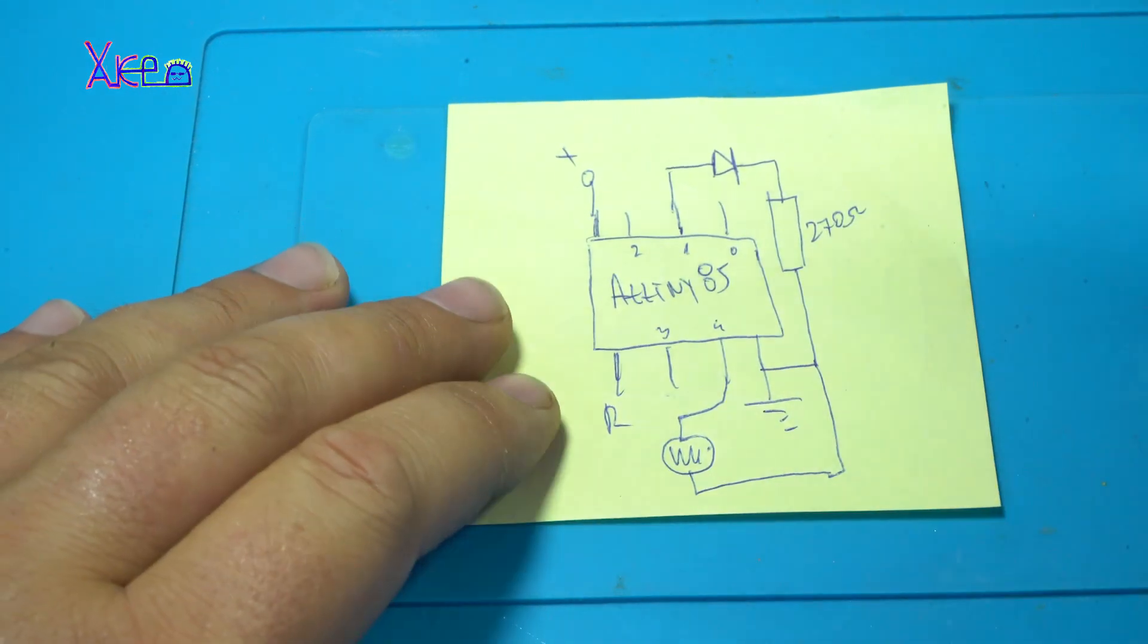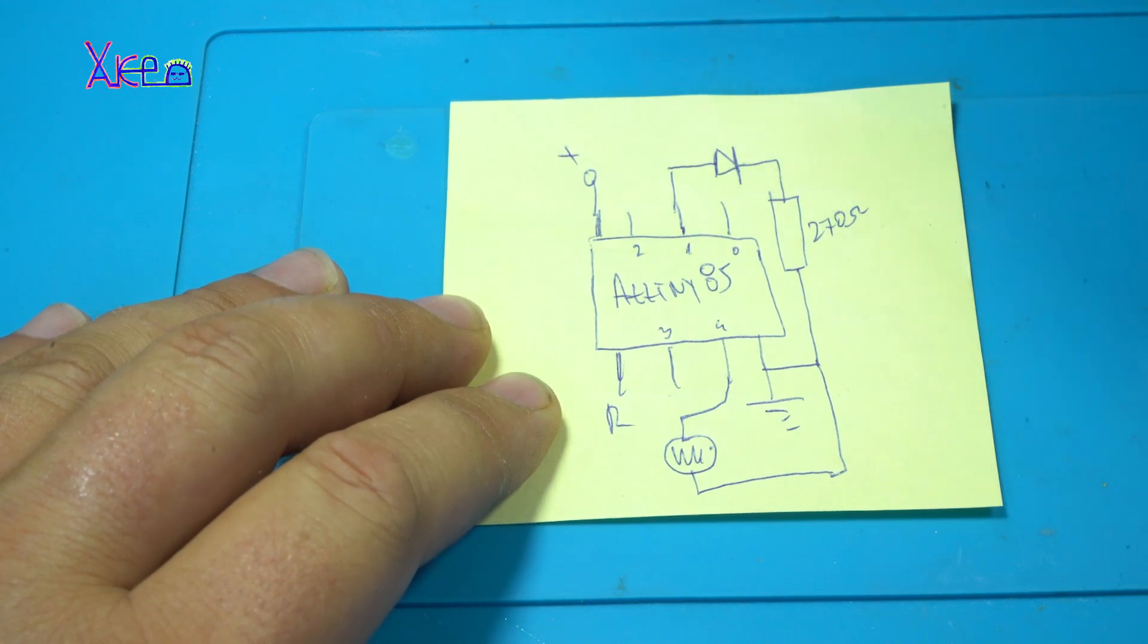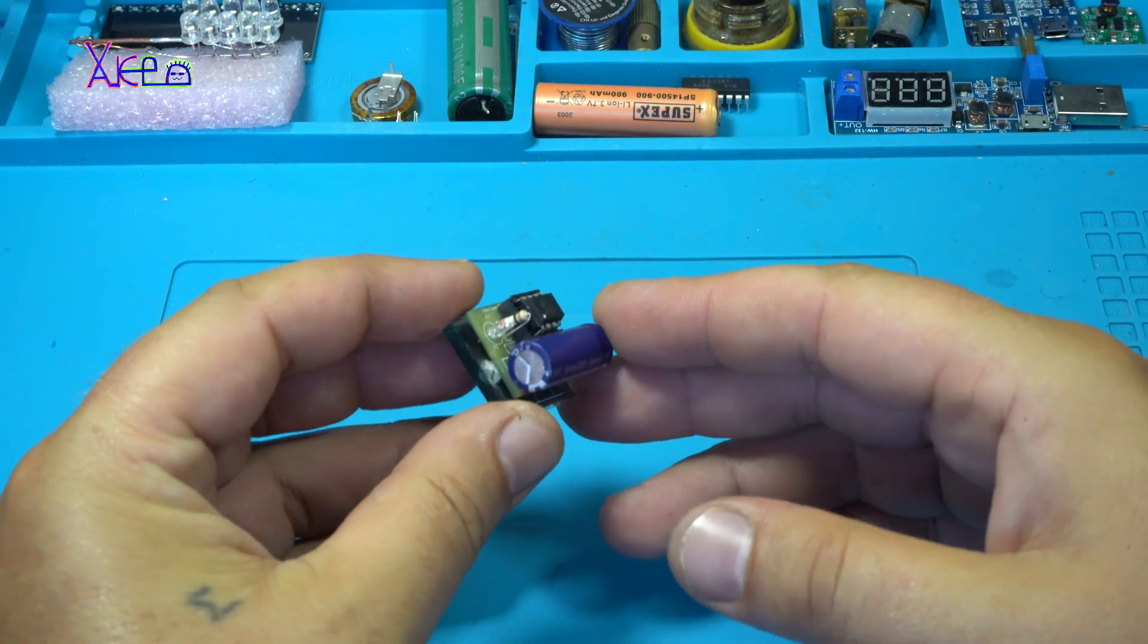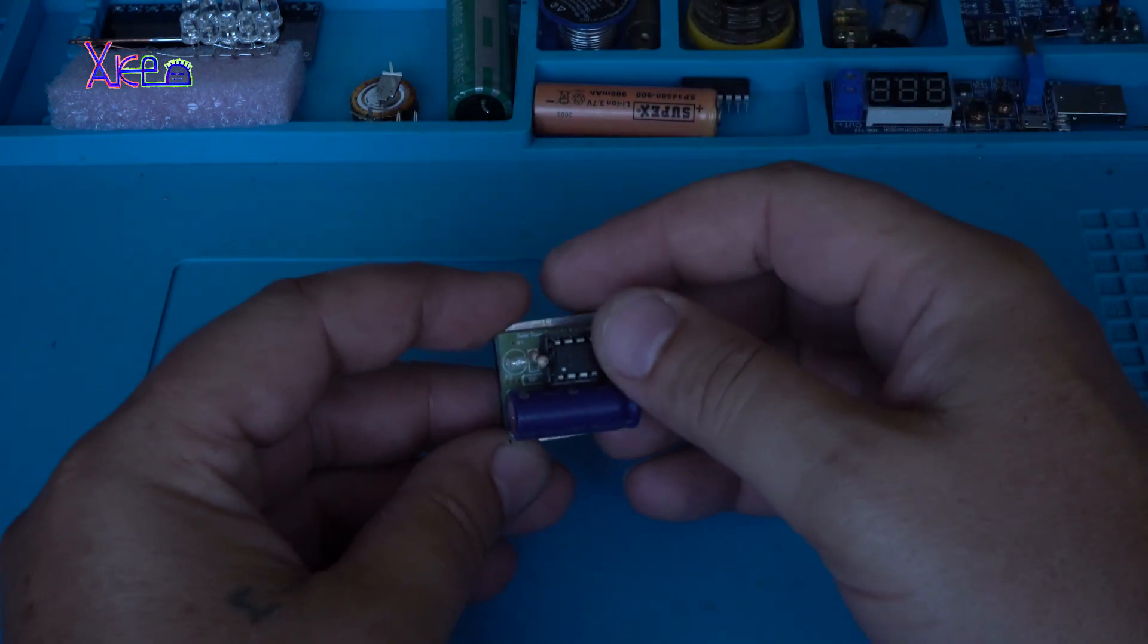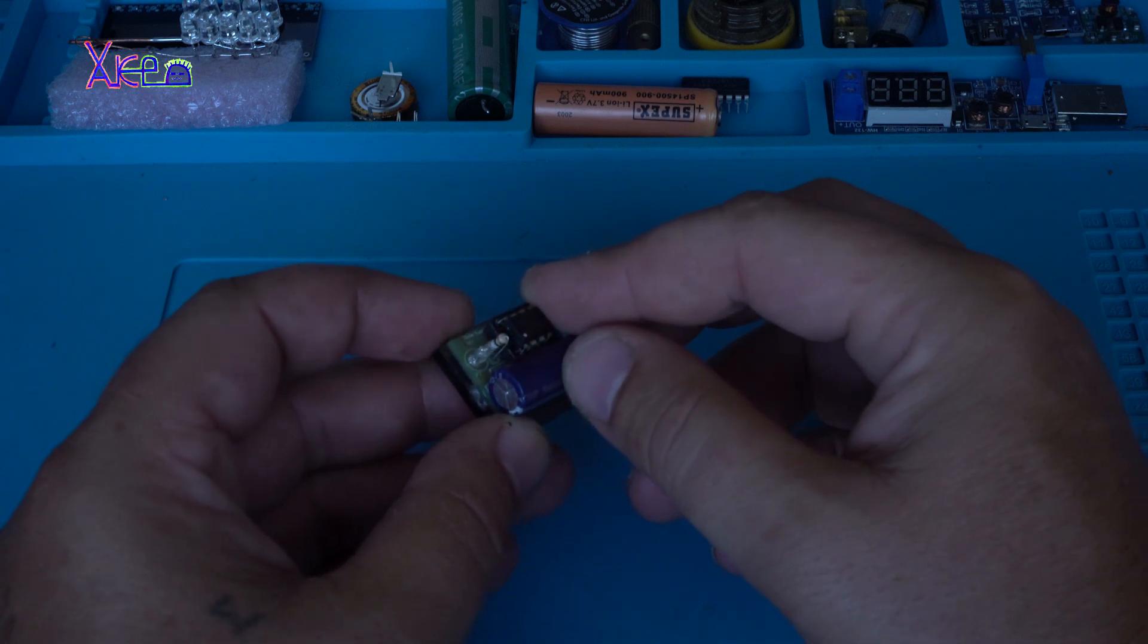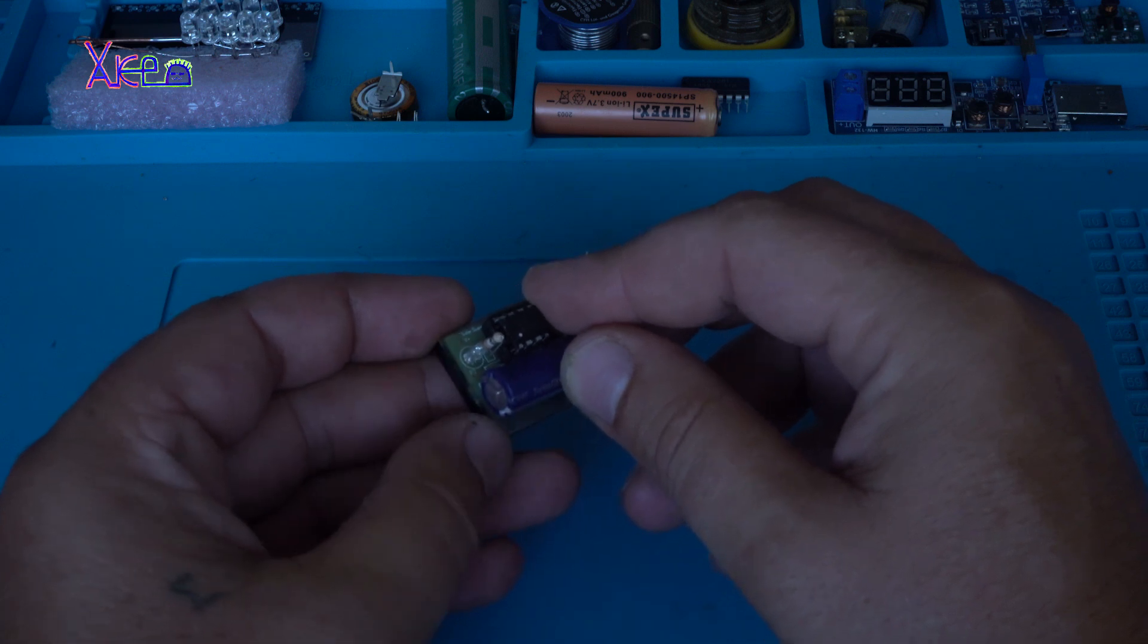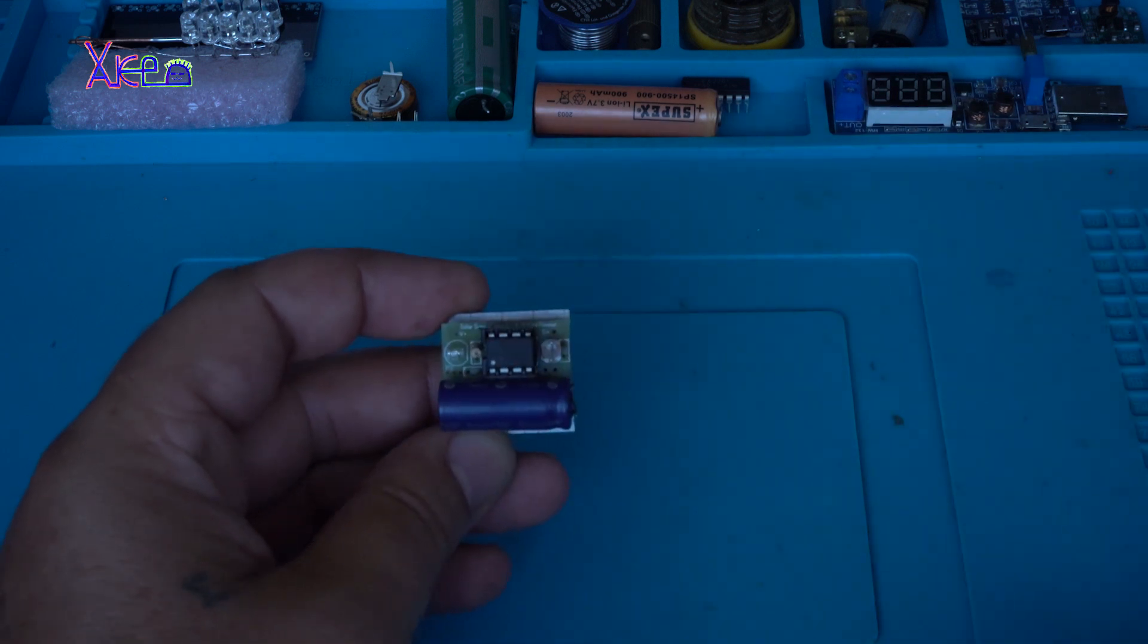I hope you understand this little circuit. The code will be in the description below. Now I'm gonna test it. Let's turn off the lights. And I'm covering the photoresistor to simulate darkness. And you can see that the red LED is blinking. Now it's not blinking.